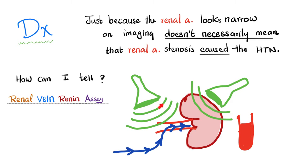However, just because the renal artery looks narrower on imaging, or just because there is a bruit on auscultation, this does not necessarily mean the patient's hypertension is caused by the renal artery stenosis — it could be caused by something else entirely. So how can we tell?